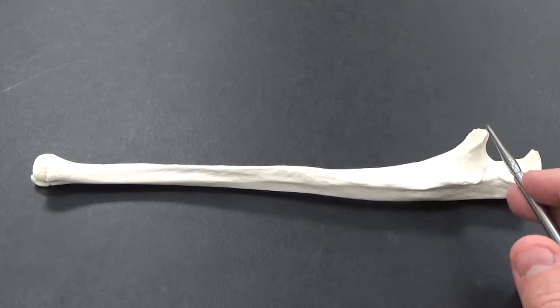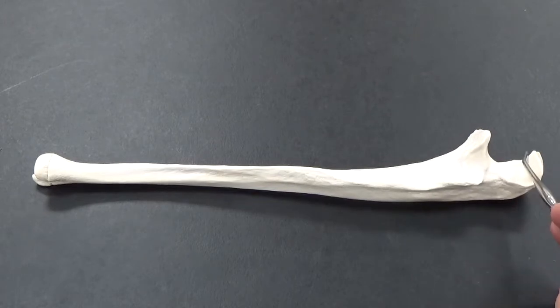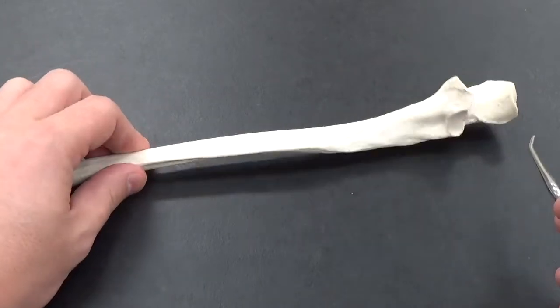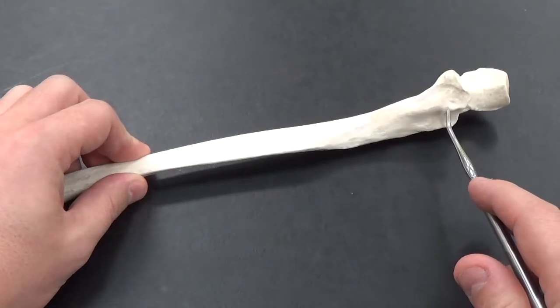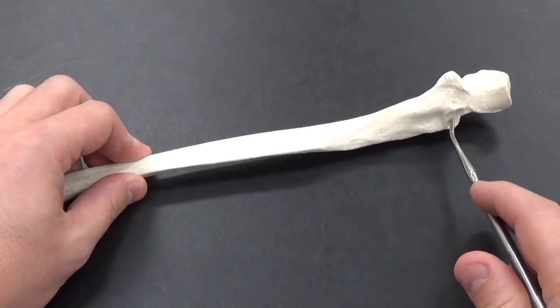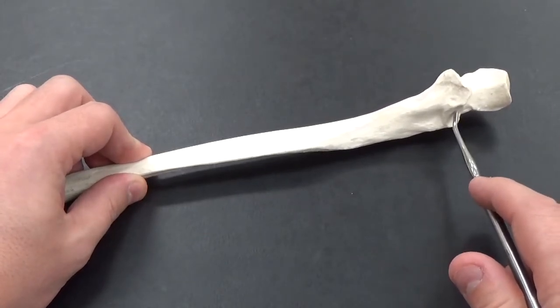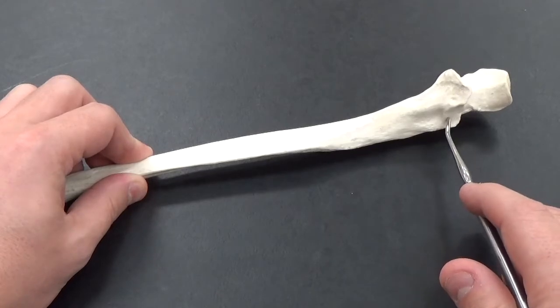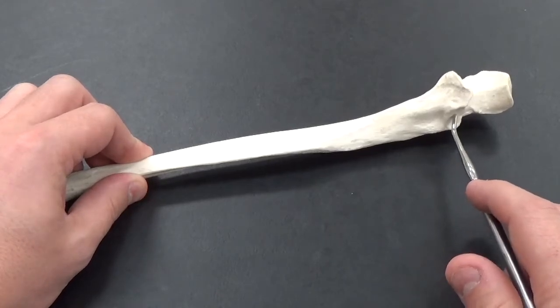You have the trochlear notch in between here. Right on the side, you can kind of see this indention part right here - that's the radial notch where the radius head would sit here on the ulna.